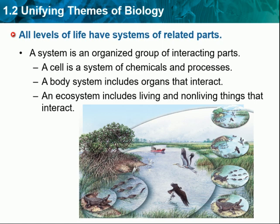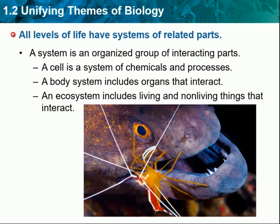In just one heart muscle cell, chemicals and processes interact in a precise way so that the cell has energy to do its work. Moving up a level, heart muscle, valves, arteries, and veins form a system in your body — the circulatory system. Two organisms that interact can also be a system, as shown in the figure here. On a larger scale, you are part of a biological system called an ecosystem, which has living and non-living parts. An ecosystem is a community of organisms and their physical environment.